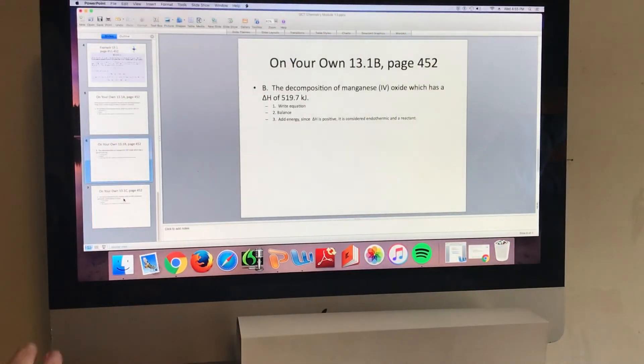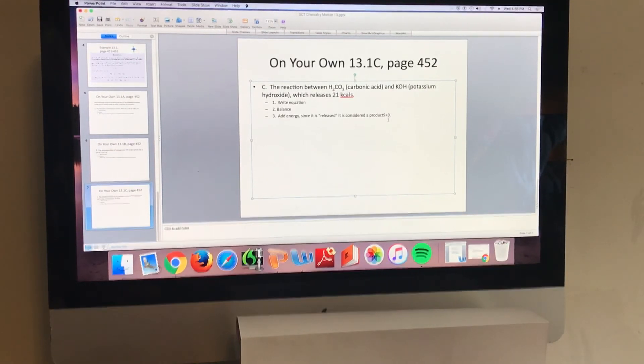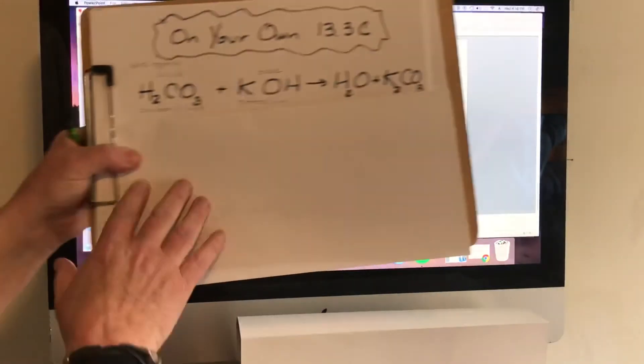Now let's look at our final on your own here. We have the reaction between H2CO3, which is carbonic acid, and KOH, which is potassium hydroxide, releases 21 kilocalories. And in this case, we'll be writing an equation, balancing it, and then adding energy. In this case, since it says the energy was released, we know automatically that it will be a product.